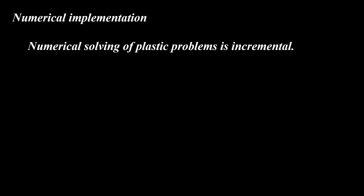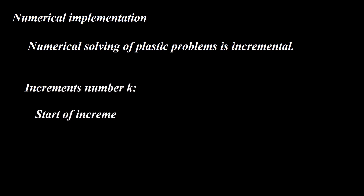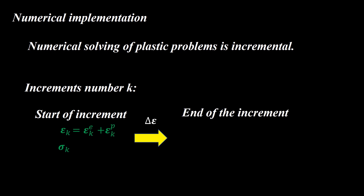To numerically solve the presented Von Mises plasticity equations, we need to consider that solving plasticity problems is incremental, so we use these equations to solve one increment at a time. Imagine we are solving increment number k. We know all parameters at the beginning of the increment from the end of the previous increment — for example, stress and strain tensors, as well as the plastic and elastic parts of the strain tensor. In the nonlinear finite element method, the total strain increment is known, and we need to calculate stress and strain at the end of the increment, including the elastic and plastic parts of the strain increment.